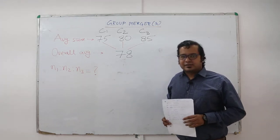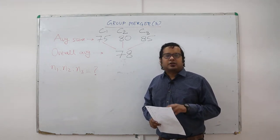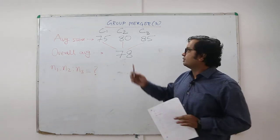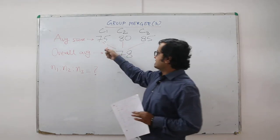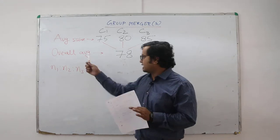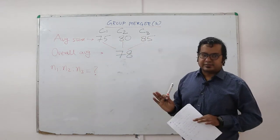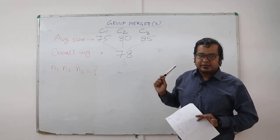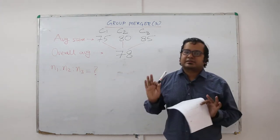A very interesting concept is group merger, which involves three variables and includes concepts of allegation and deviation from the chapter on averages. There are three classrooms C1, C2, and C3. The average score of students in each class is 75, 80, and 85. When the three classes are merged, the overall average becomes 78. You need to find the ratio of the number of students in the three classes — n1, n2, and n3.